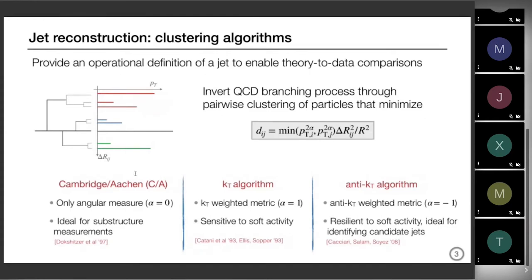Depending on the choice of alpha you end up with a different clustering history. The three most common clustering algorithms are: Cambridge/Aachen where you set alpha equals zero — clustering only based on angular distance, which is ideal for substructure measurements because it gives an angular-ordered tree. The kt algorithm is sensitive to soft activity because alpha equals one, so you start from soft to hard. And anti-kt is basically the opposite with alpha equals minus one, ideal for identifying candidate jets.